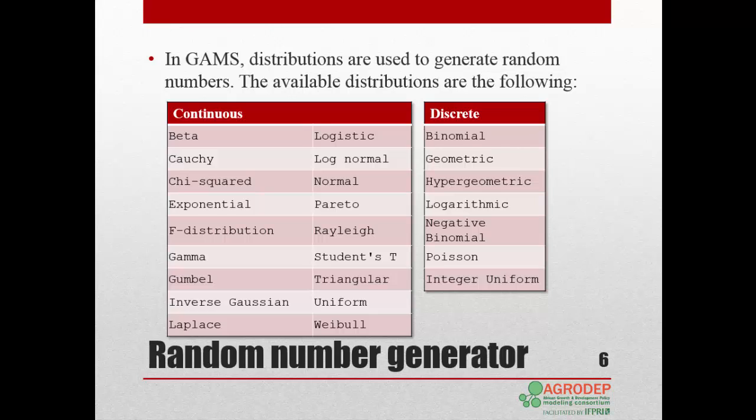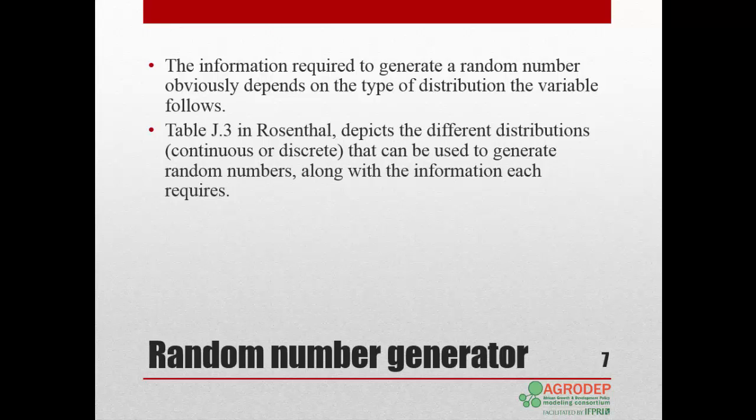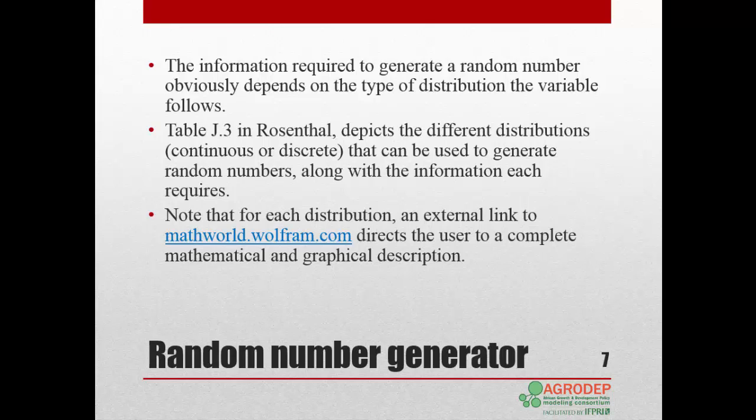It is not our objective to cover in detail the distribution functions available in GAMS. We refer you to appendix J4 of the GAMS User's Guide for a complete list of distribution functions and their description. Each type of distribution function requires additional information to generate random numbers. Note that in the appendix, for each distribution, an external link to mathworld.wolfram.com directs the user to a complete mathematical and graphical description of the corresponding distribution.